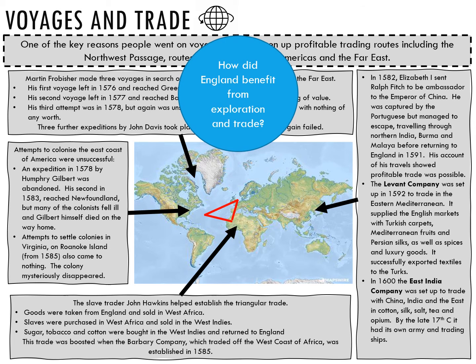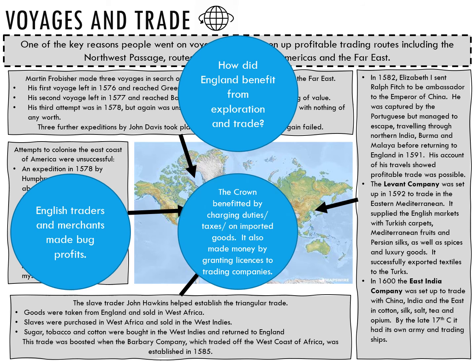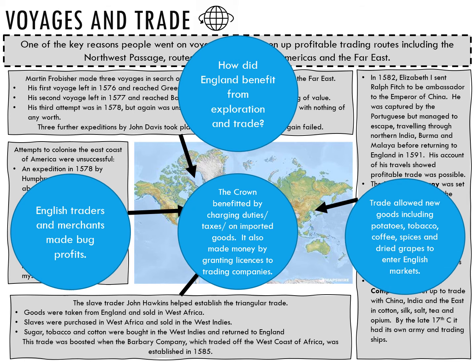England benefited from exploration and trade in several ways. English traders and merchants made big profits from trading with other countries. The Crown benefited by charging duties or taxes on imported goods, and also made money by granting trading licences to organisations like the Barbary Company and the East India Company. Trade also allowed access to new goods — including potatoes, tobacco, coffee, spices and dried grapes — which could then enter the English market.